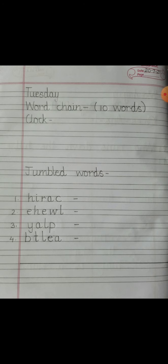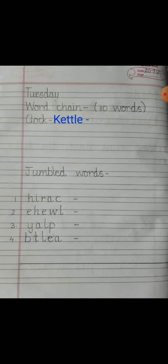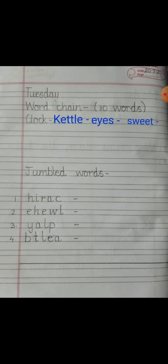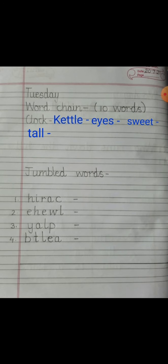This word ends with the letter K, so the next word will be 'kettle', because kettle starts with K. Kettle ends with the letter E, so the next word is 'eyes'. This word ends with the letter S, so the next word starts with S — that is 'sweet'.